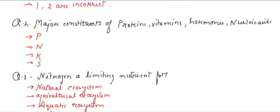The second question: what are the major constituents of proteins, vitamins, hormones, and nucleic acids? The answer is nitrogen. Proteins are chains of amino acids — ammonia is first converted into amino acids, which then form polypeptide chains joined through peptide bonds. Vitamins play roles in processes, hormones are chemical messengers, and nucleic acids (DNA and RNA) are the genetic material.